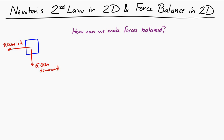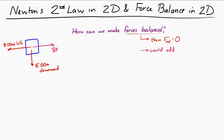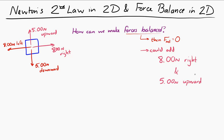If the forces are balanced, then the net force has to be zero — the object has to be in equilibrium. In order for everything to balance, I could add eight Newtons to the right, because that will balance out the eight Newtons to the left. And then I could add five Newtons upward, and that would balance out the five Newtons downward. So with those two forces added, it's balanced.